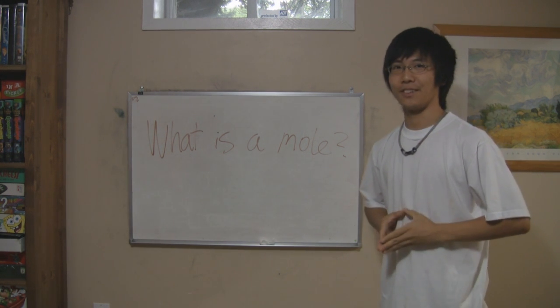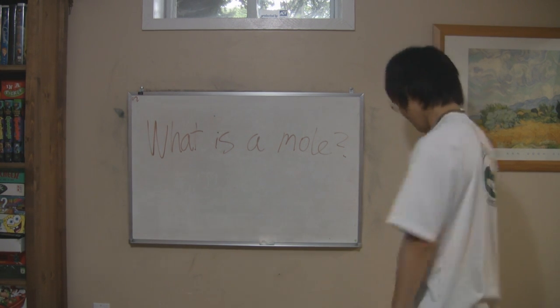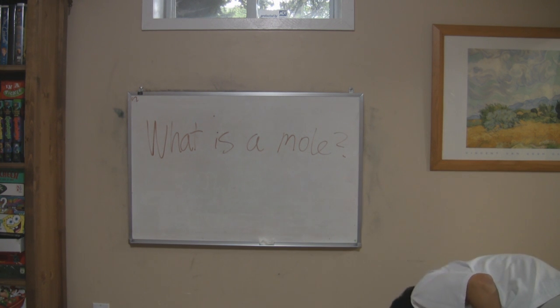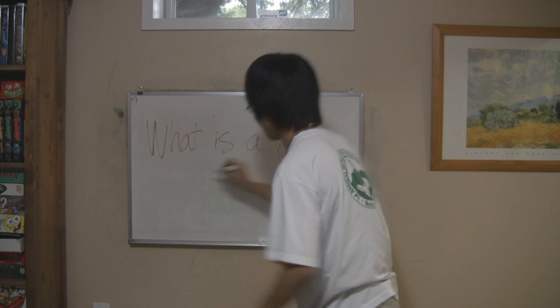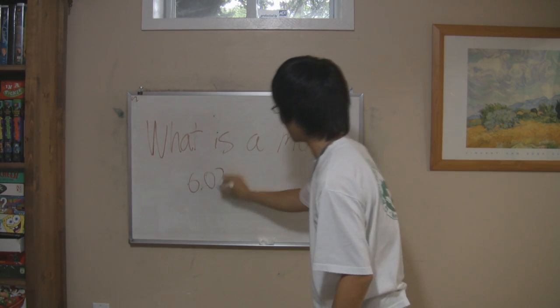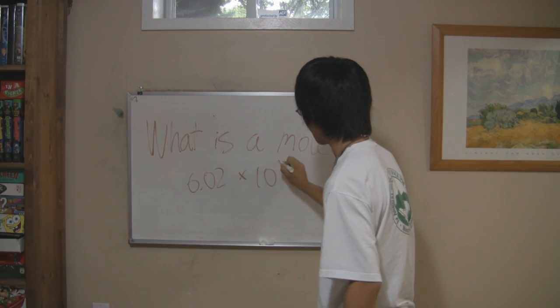What is a mole? Well, mole is an animal. But in chemistry, mole is 6.02 times 10 to the 23rd.